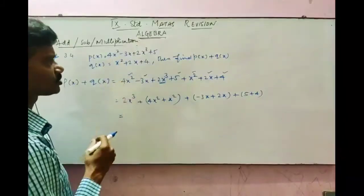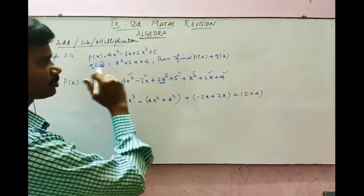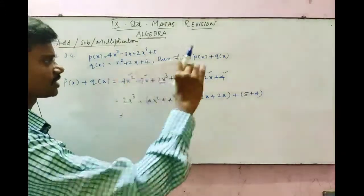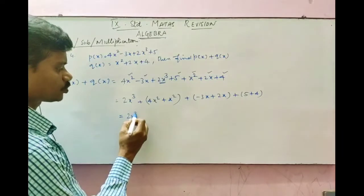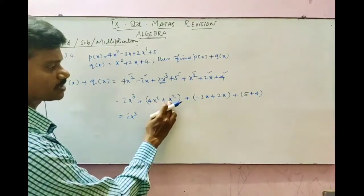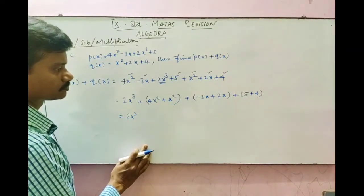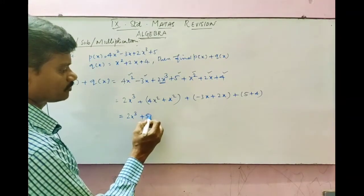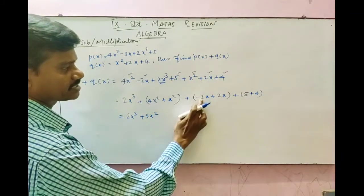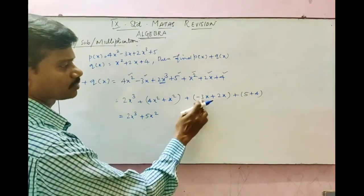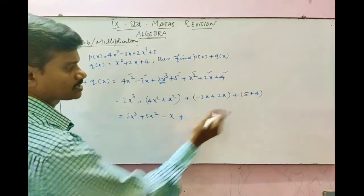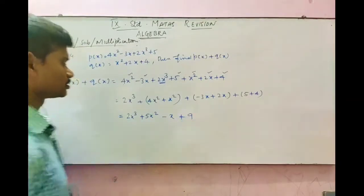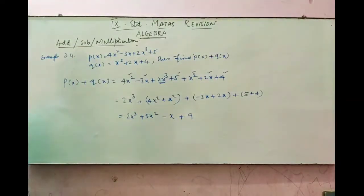You can also do this in vertical form. For that, you have to arrange the given polynomials in standard form — arranged from descending powers. So: 2x cubed, then 4x squared plus x squared gives 5x squared. Minus 3x plus 2x: subtract and put the greater number sign, giving minus 1x. Plus 5 plus 4 gives 9. So this is the addition of the two given polynomials.